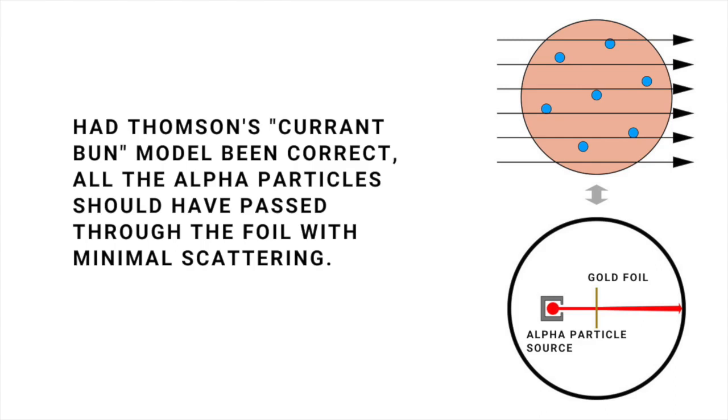According to one popular theory at the time, championed by J.J. Thompson, atoms were built along the lines of current buns, with negatively charged electrons for currents and a smeared out positive charge for the rest of the bun to keep the whole thing electrically neutral.